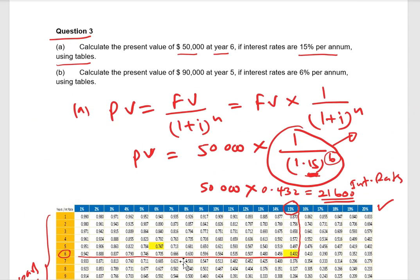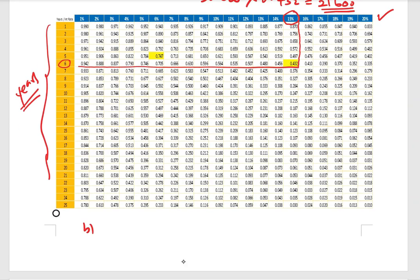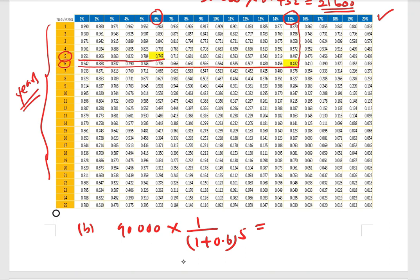Part (b): calculate the present value of ninety thousand at year five if interest rates are 6% per annum. Ninety thousand times one over 1.06 to the power five. From the table, identify the 6% interest rate column and the fifth year row — the discounting factor is 0.747. So ninety thousand multiplied by 0.747 gives you sixty-seven thousand two hundred and thirty.